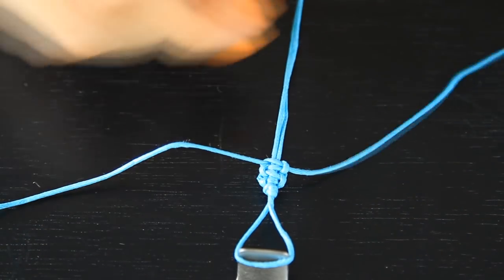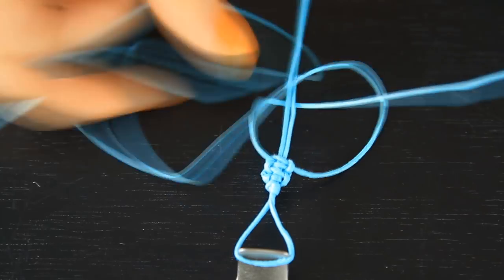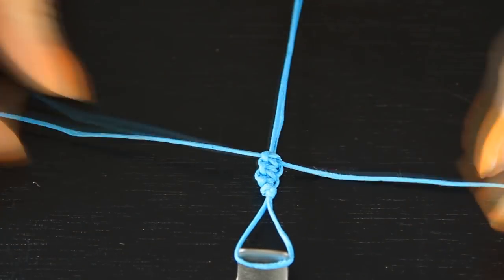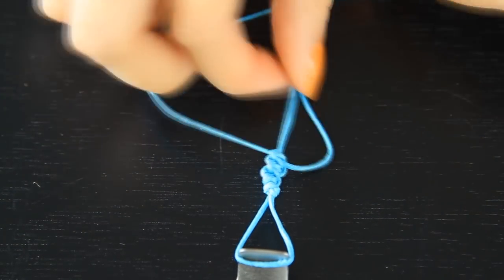Okay, so for somebody with a small wrist like myself, I make about 15 square knots. And then I start to add in the beads.